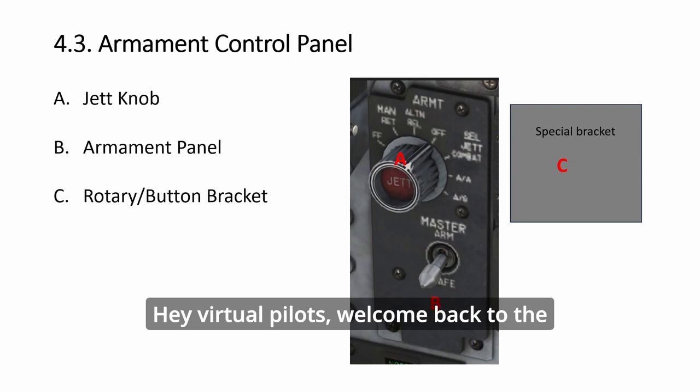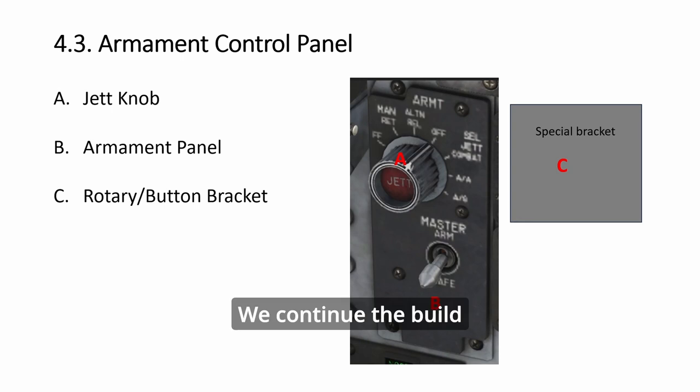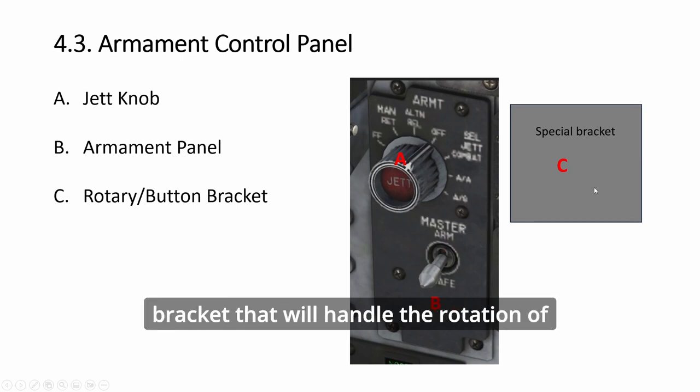Hey virtual pilots, welcome back to the SimPit Academy channel. We continue the build for the front console. Today we will look at this armament control panel where we have a master arm and jettison button. For this build we have three parts: the knob, the panel, and a special bracket that will handle the rotation of the rotary switch and then the push-button combination.